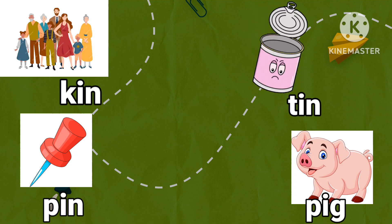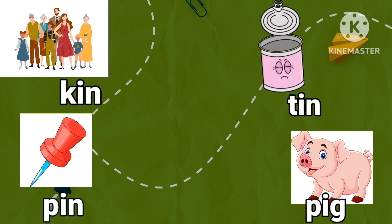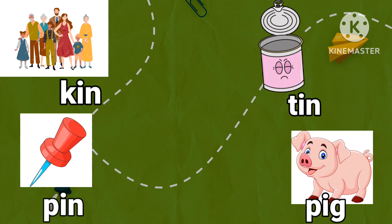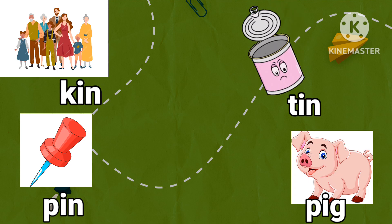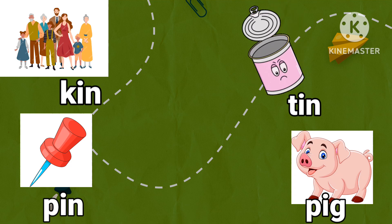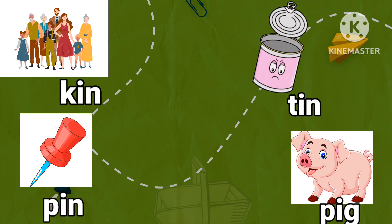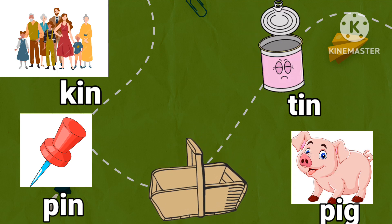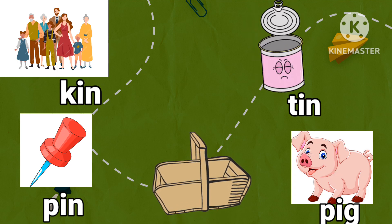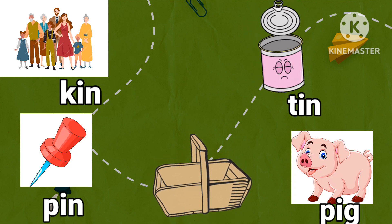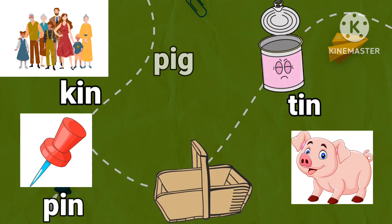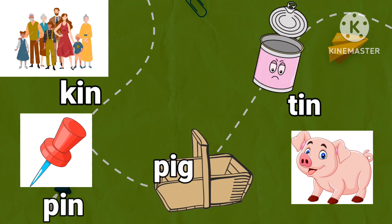Next. Kin, pin, tin, pig. Kin, pin, tin, pig. Pick out the word that does not rhyme in this group. Pig. Pick out the word pig and drop it in the basket.